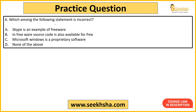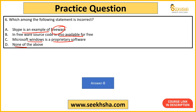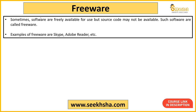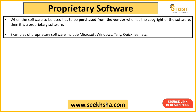Next question: Which statement is correct? Option A — Skype is an example of freeware. Option B — freeware source code is also freely available. Option C — Microsoft Windows is proprietary software. The incorrect statement is option B. Freeware is software freely available to use, like Skype or Adobe Reader, but its source code is NOT publicly available. Proprietary software, like Microsoft Windows or QuickHeal antivirus, must be purchased and is not free.